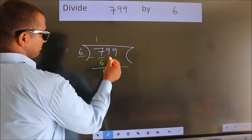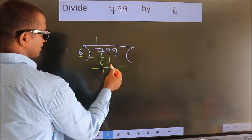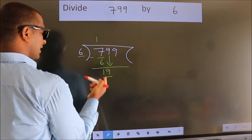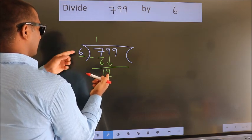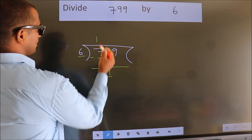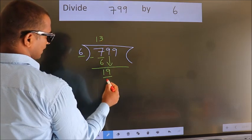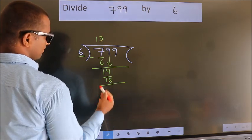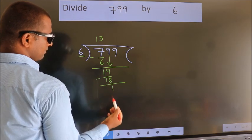After this, bring down the beside number. 9 down, so 19. A number close to 19 in the 6 table is 6 threes, 18. Now we subtract. We get 1.